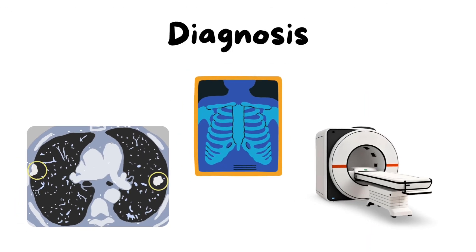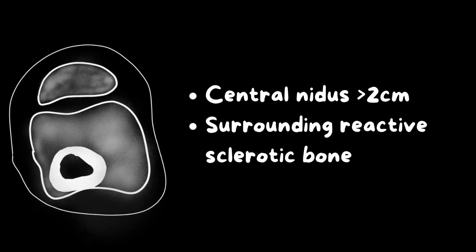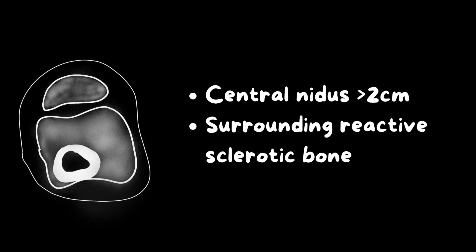For diagnosis, X-ray, CT, and MRI can all be helpful. The characteristic feature seen on X-ray and CT is a central dark area called the central nidus, which in osteoblastoma is usually more than two centimeters in size — compared to osteoid osteoma where it is less than two centimeters. There is surrounding reactive sclerotic bone appearing white or dense around the central nidus. This sclerosis is well defined in osteoid osteoma, whereas in osteoblastoma it may not be very well defined.